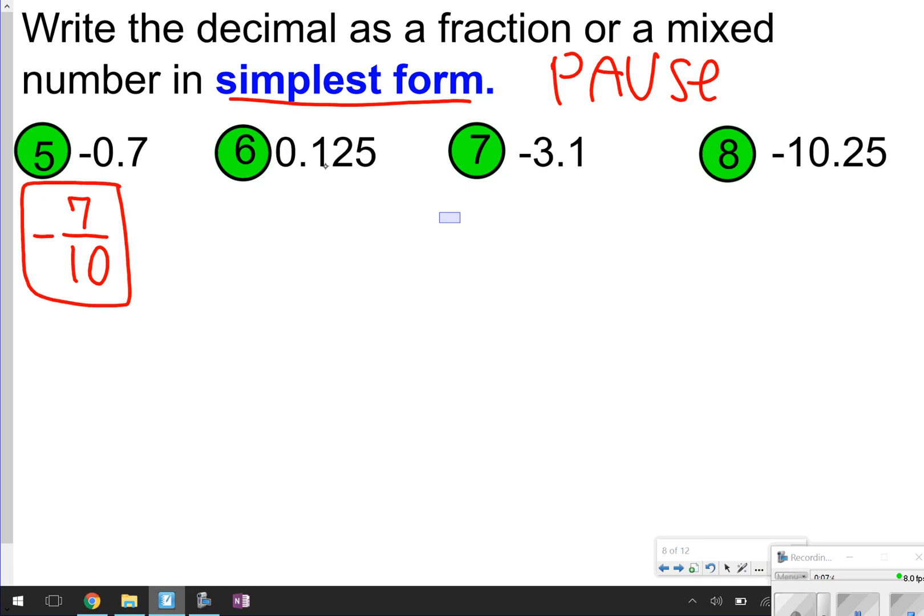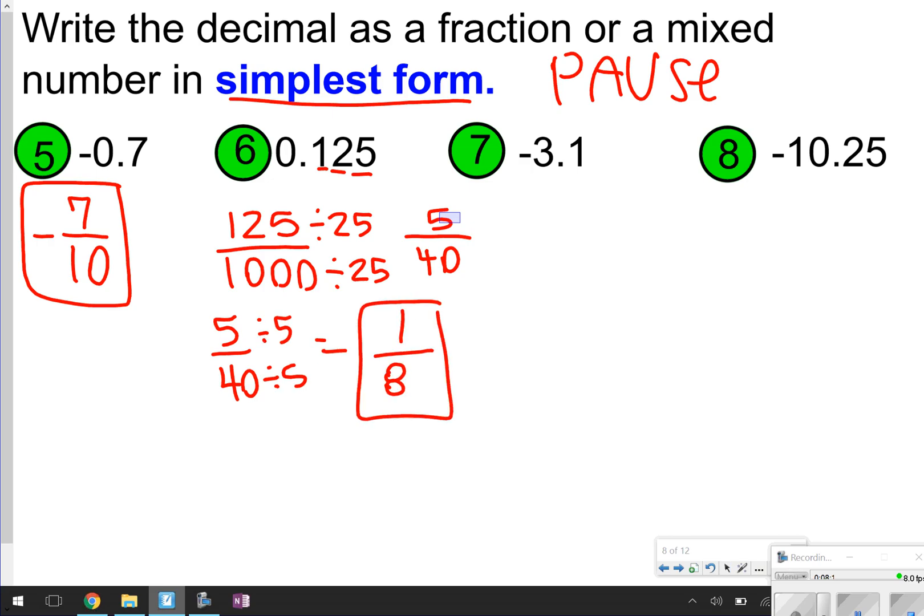Number 6, that's 0 and tenths, hundredths, thousandths. So, 125 over 1,000. Here's where you really have to focus on simplifying. I like to think of quarters, so I'm going to divide both of these by 25. How many quarters make $1.25? That'd be 5. And how many quarters make $10? That's going to be 40. And then I can simplify 5/40 one more time. If I divide both those by 5, I get 1/8 for number 6.